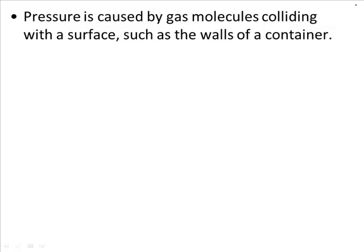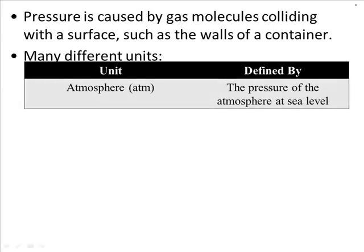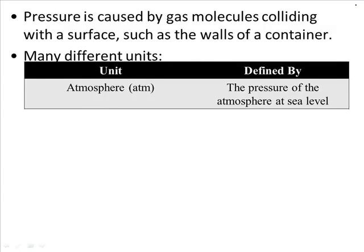There are many different units for measuring pressure, arising from different interpretations and applications. One of the most important in science and chemistry is the atmosphere, abbreviated atm. It's defined as the pressure of the atmosphere at sea level on a relatively calm day, which is convenient because atmospheric pressure is usually very close to one atmosphere. In some places, it differs due to altitude and weather.